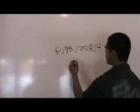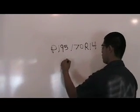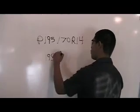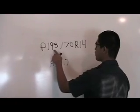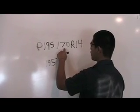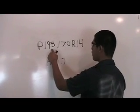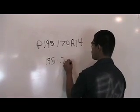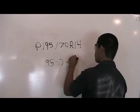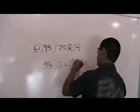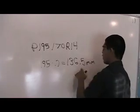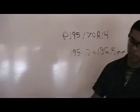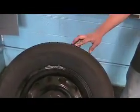The equation for this is 195 times 0.7, which is 70% of 195, which equals 136.5 millimeters. That is the height of the tire from the rim to the top of the tire.